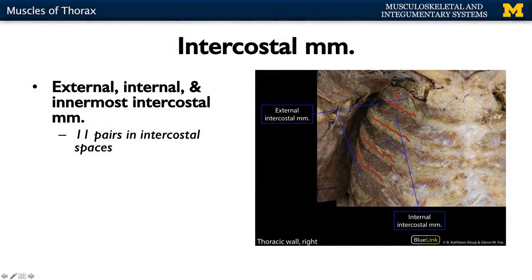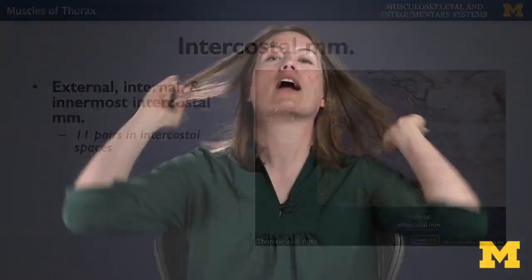What we're seeing here are the external intercostal muscles — notice the direction of their fibers. Think about putting your hands in your pocket; that's the direction these fibers run. The internal intercostals run perpendicular — think about getting the hair out of your face. It's important that these muscle fibers are perpendicular to one another to provide extra stability in this region.